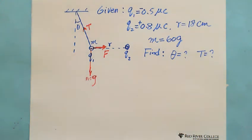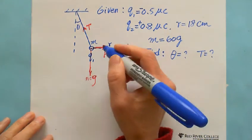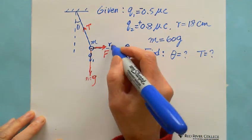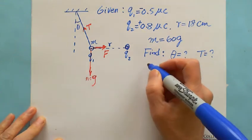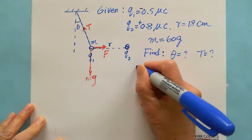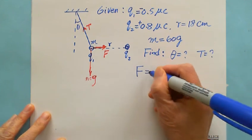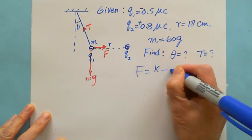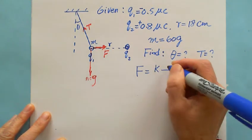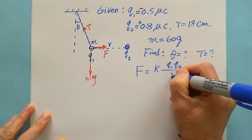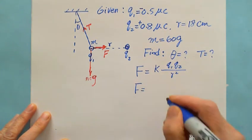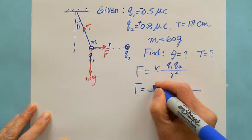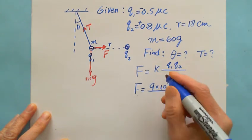So we're looking for the angle theta and the tension force. First of all, we can use Coulomb's law to find the force. Force equals Coulomb's law: F equals K Q1 Q2 divided by R squared.